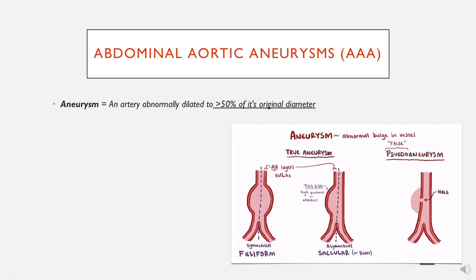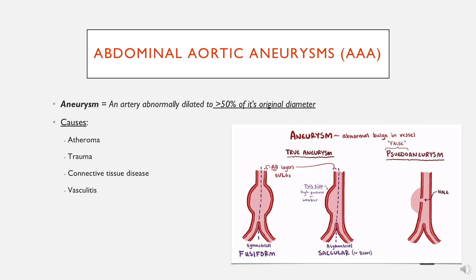Before going on to talk about what the different branches supply, I'll go over triple-A's — abdominal aortic aneurysms. Starting with the basics, an aneurysm is any artery which is dilated to more than 50% of its original diameter, and this dilation has to be abnormal. The causes are usually atheroma — the same kind of thing that causes aneurysms in the heart or brain — and also trauma, connective tissue diseases, and vasculitis.